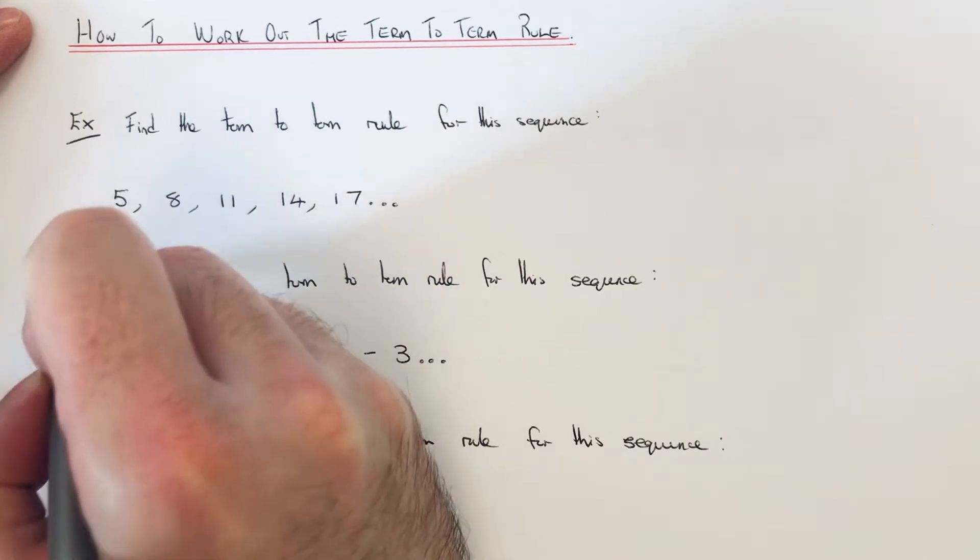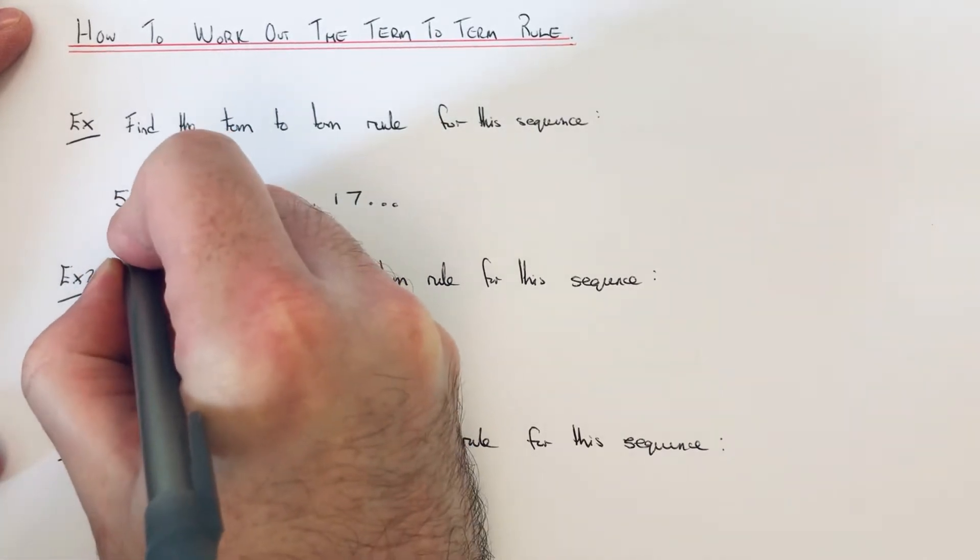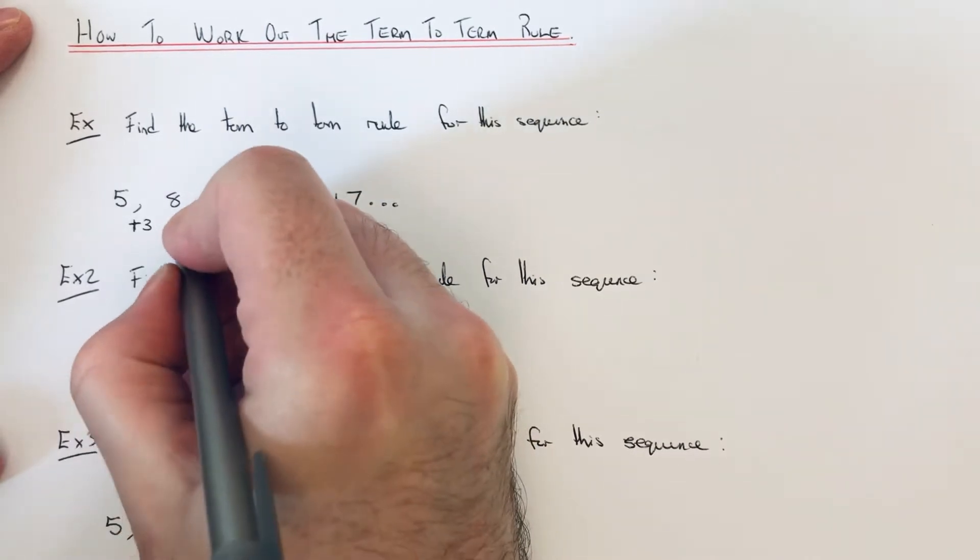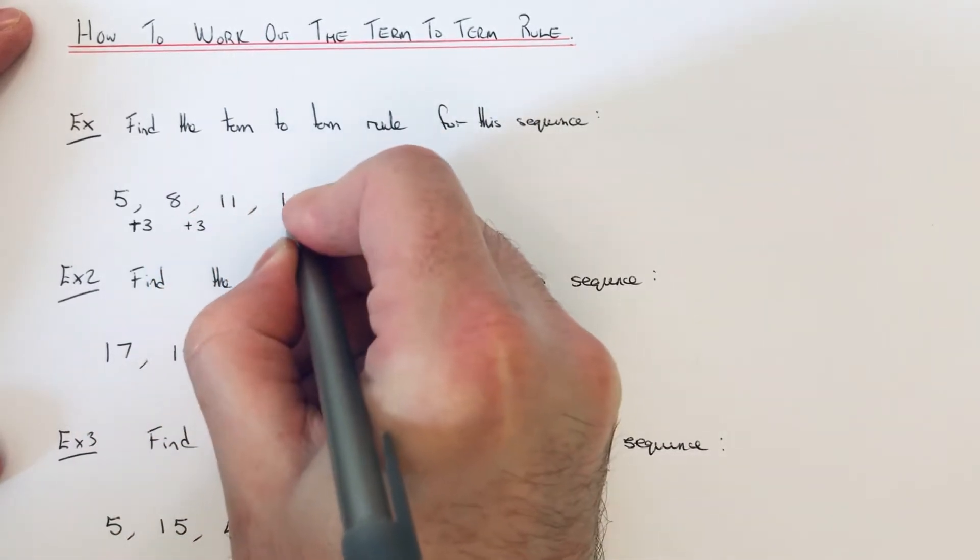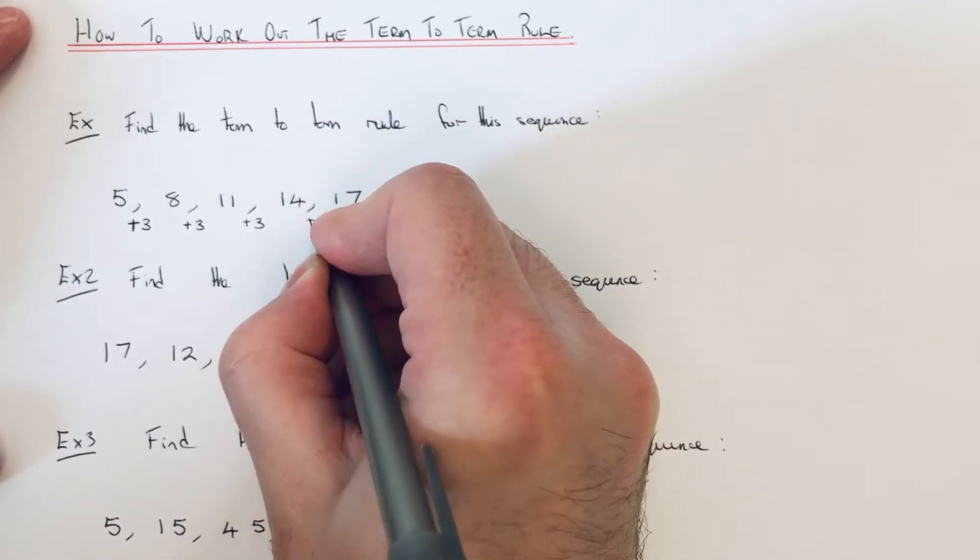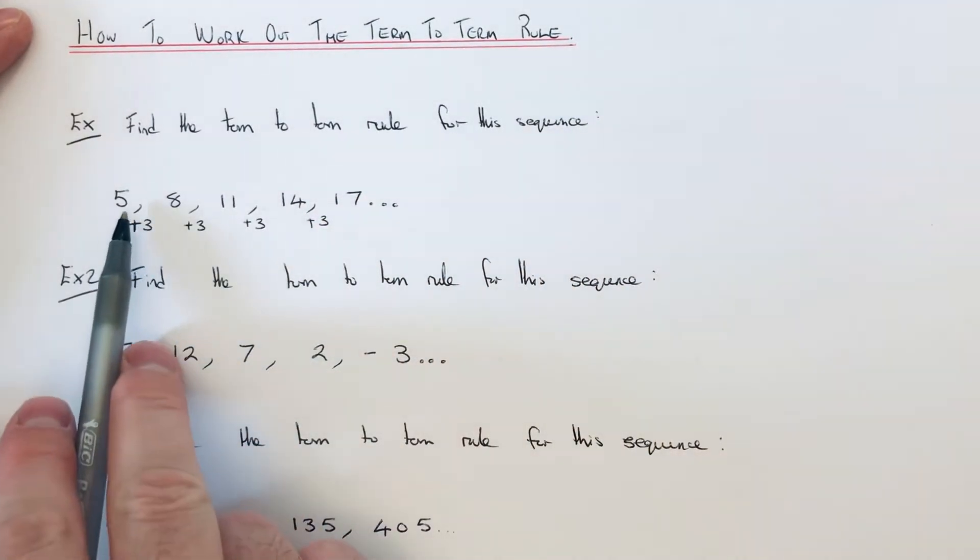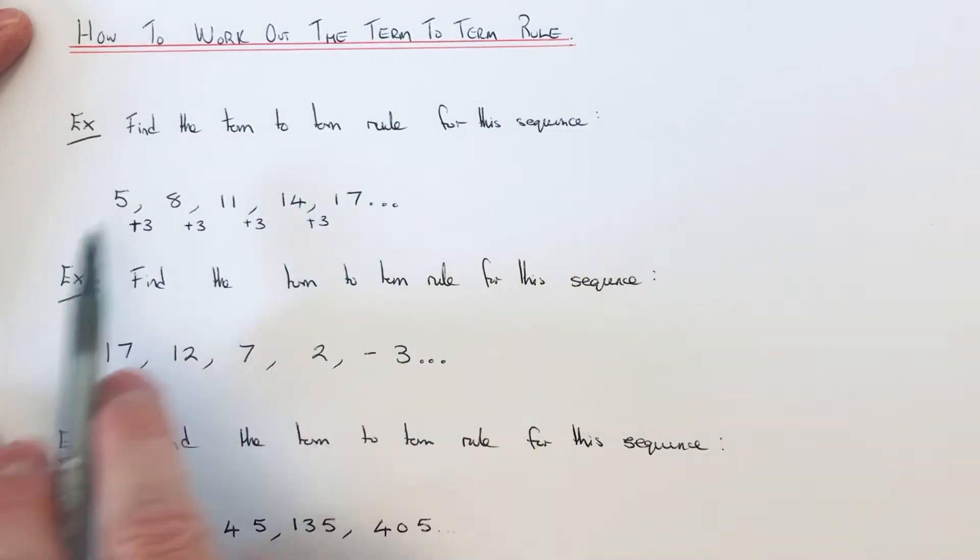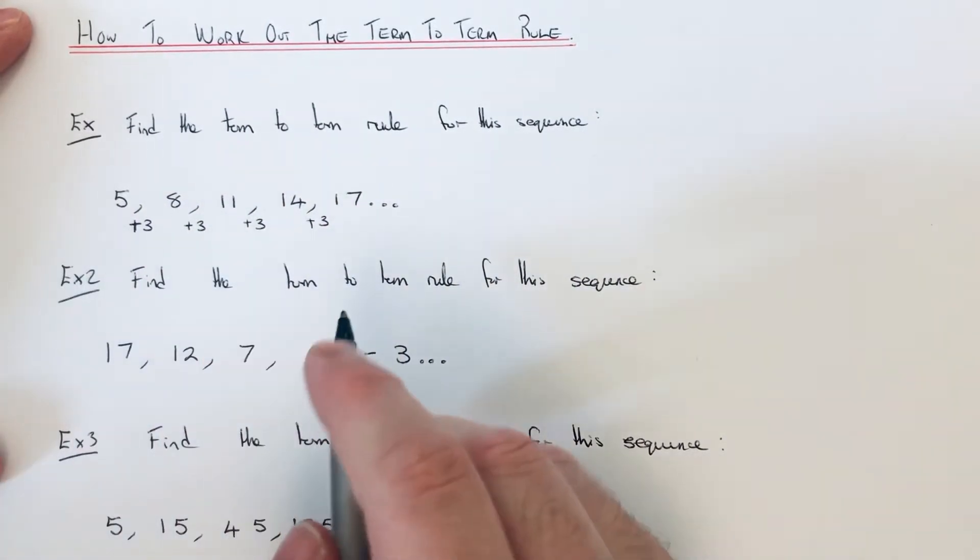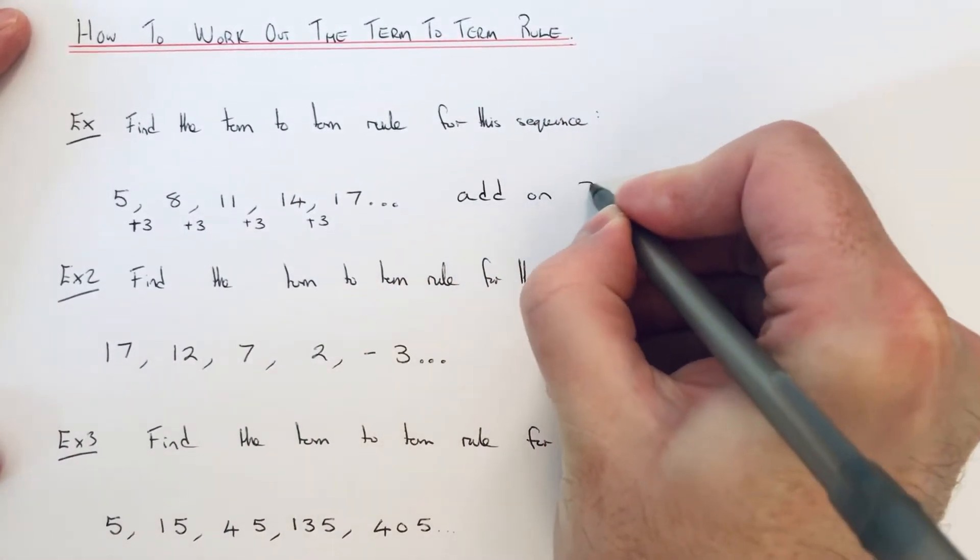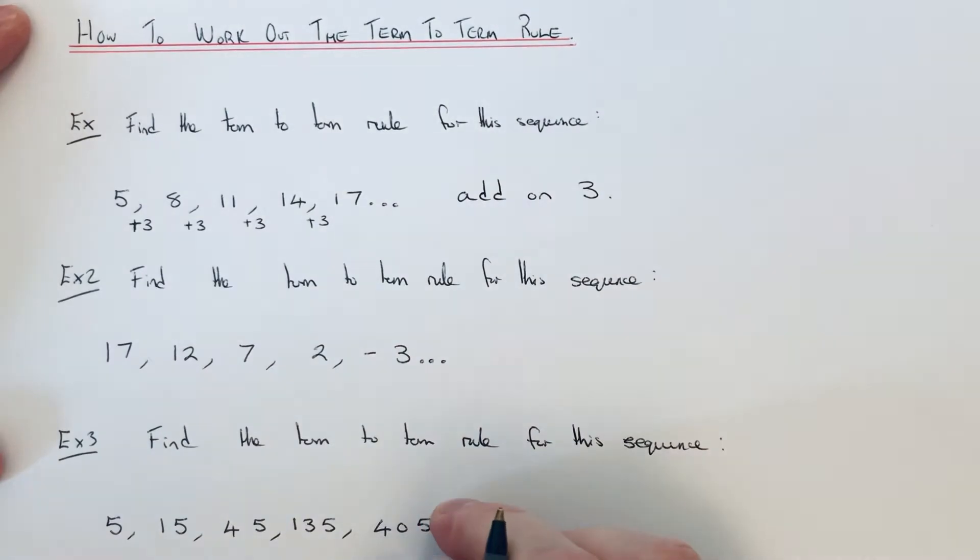So if we go 8 take away 5, that is 3. Okay, 11 take away 8 is also 3. 14 take away 11 is also 3. 17 take away 14 is also 3. So it looks like from one term to the next term, you just need to add on 3 to get the next number. So the rule for this sequence is add on 3. And that is called the term to term rule.